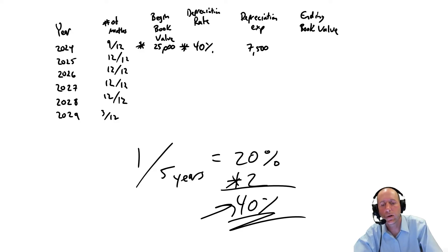Nine twelfths times 25,000 times 40% times 0.4 is $7,500 in depreciation in year one. What is my ending book value? If I had beginning book value of 25 and I'm going to depreciate this asset for $7,500 in year one, my ending book value is $25,000 minus $7,500, which is $17,500. This thing has lost $7,500 in value.